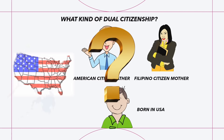In the first situation, there is automatic dual citizenship — dual citizenship by operation of law — for a child born in the Philippines of an American father and a Filipino mother. The American citizen father must file a U.S. Consular Report of Birth at the U.S. Embassy, and the Filipino citizen mother must register the birth and obtain a PSA birth certificate. After doing this, the child can apply directly for both a U.S. passport and a Philippine passport.